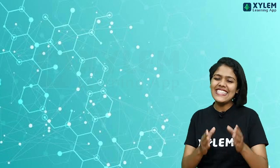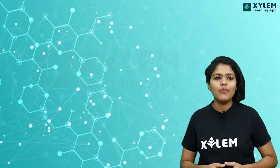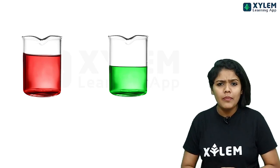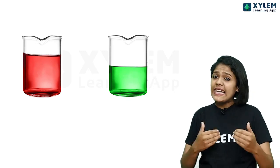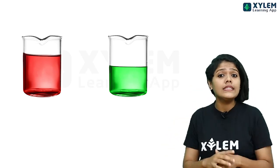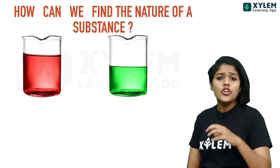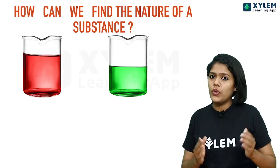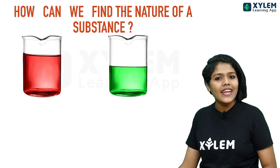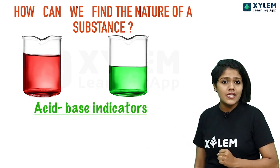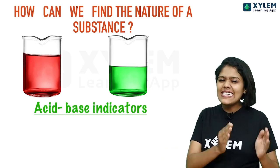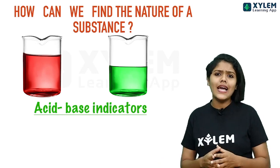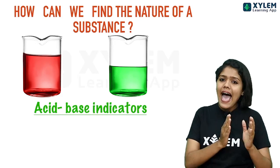Hi, dear students, welcome to Asylum Learning. This is Trilakshmi, chemistry faculty. In this class we discuss universal indicators. I have taken two solutions — we can differentiate them by color, taste, or quantity to identify the nature of a substance as acid or base. We should never taste or touch them; instead we use acid-base indicators such as litmus paper, turmeric indicator, hibiscus indicator, phenolphthalein, or methyl orange, which show significant color change in acidic or basic media.